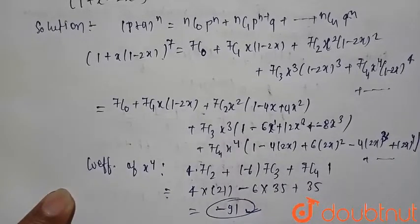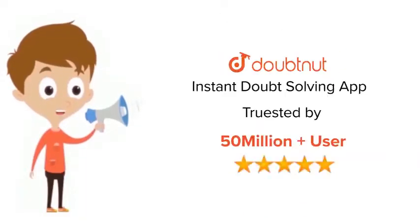So coefficient of this is equal to minus 91. Thank you. For class 6 to 12, IIT-JEE and NEET level, trusted by more than 5 crore students, download Doubtnut today.